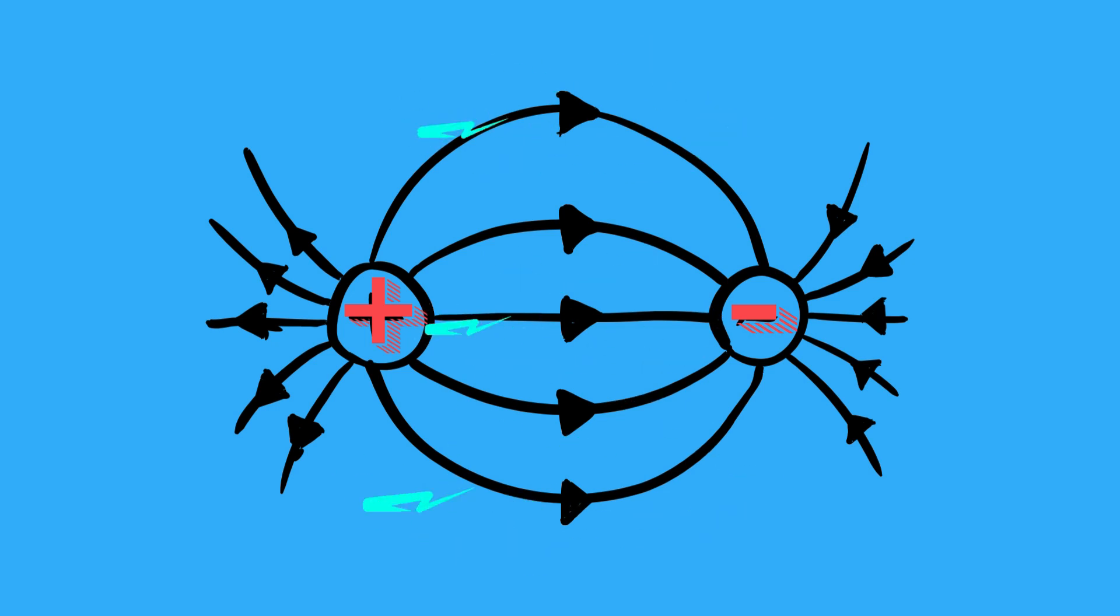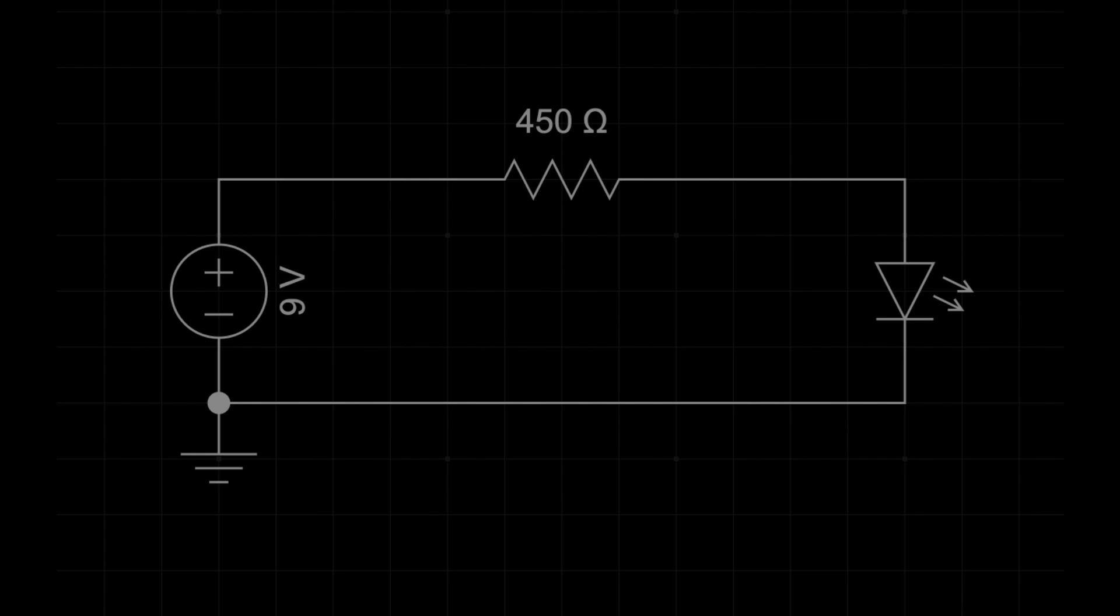This push is what powers all the components in your circuit, from resistors to LEDs. Imagine you have a 9-volt battery. This battery creates an electric potential difference between its two terminals. The positive terminal has a higher electric potential than the negative terminal.